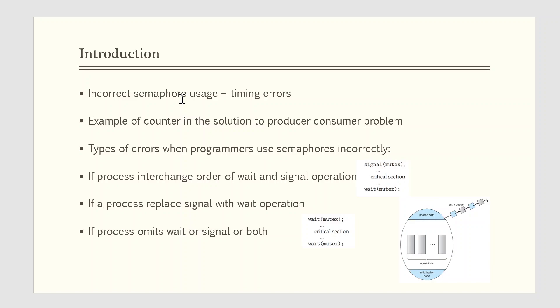Unfortunately, such timing errors can still occur when semaphores are used. To illustrate this, we review the semaphore solution to the critical section problem. All processes share a semaphore variable mutex which is initialized to 1. Each process must execute wait of mutex before entering the critical section and signal of mutex afterward. Next we examine the various difficulties that may result. Note that these difficulties will arise even if a single process is not well behaved.